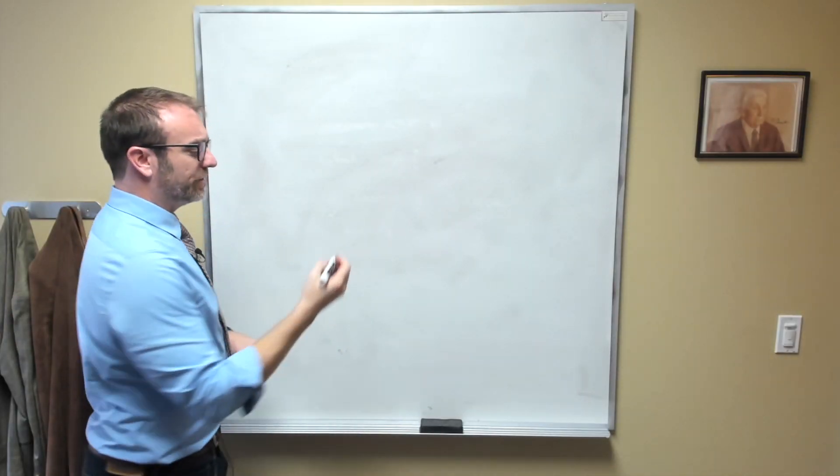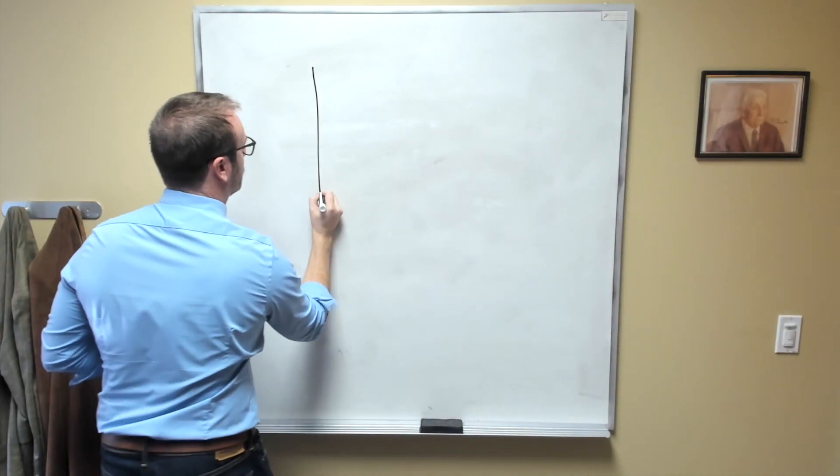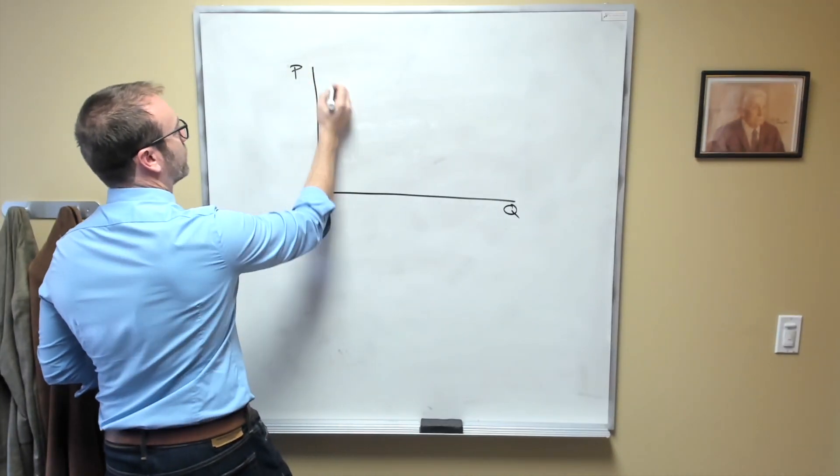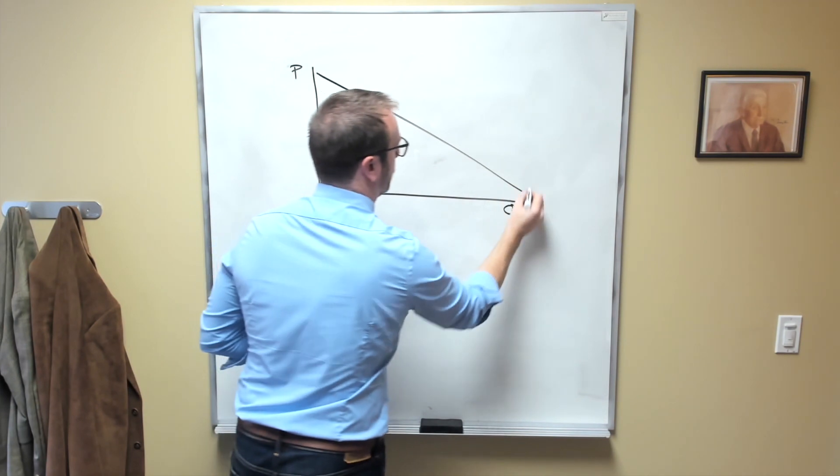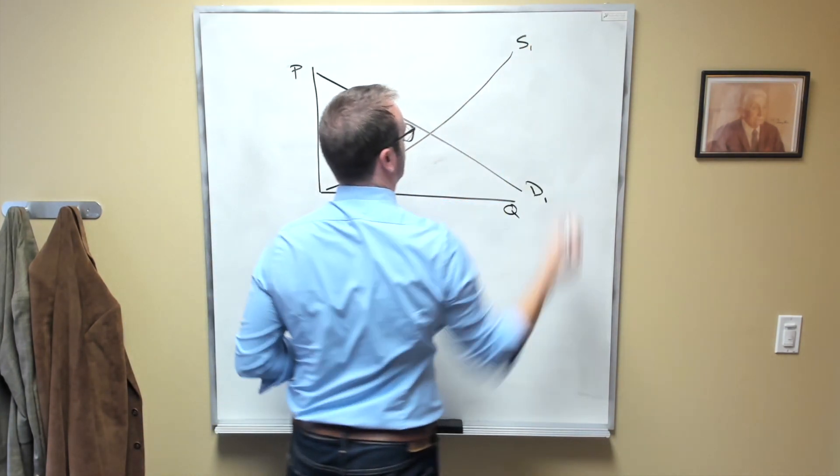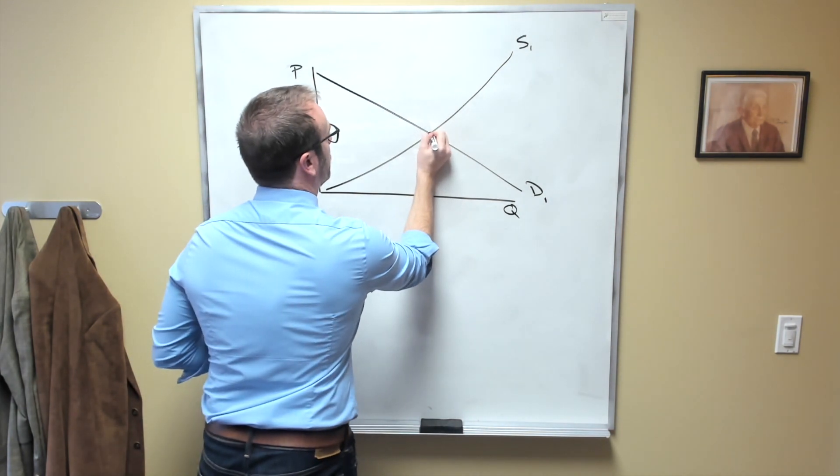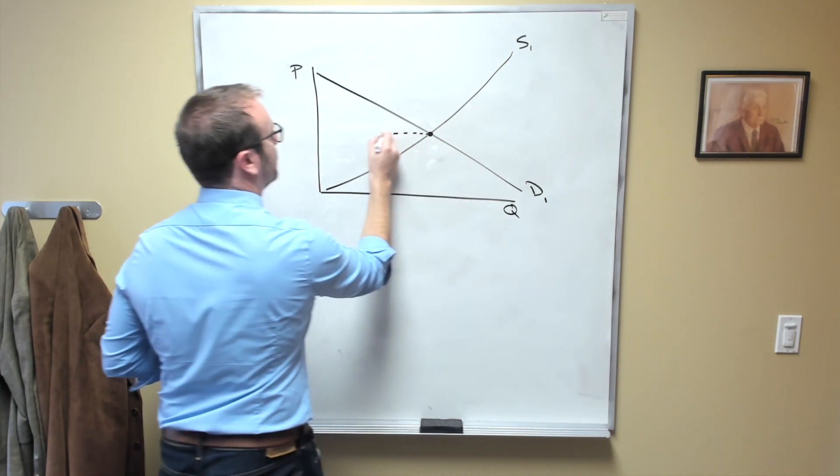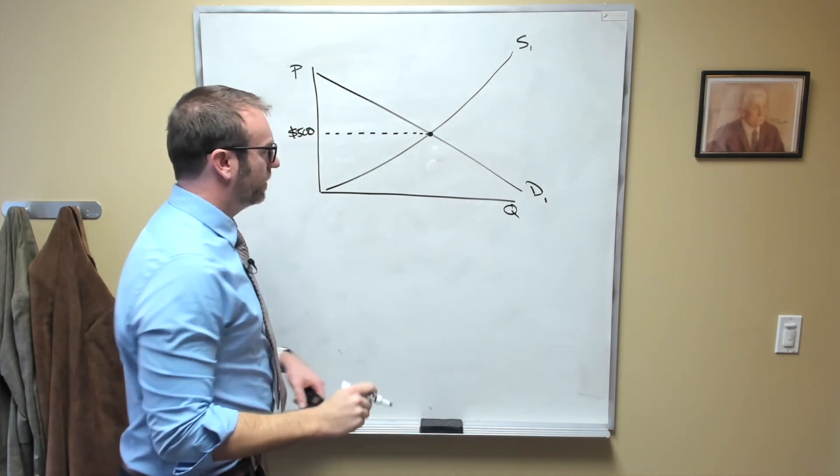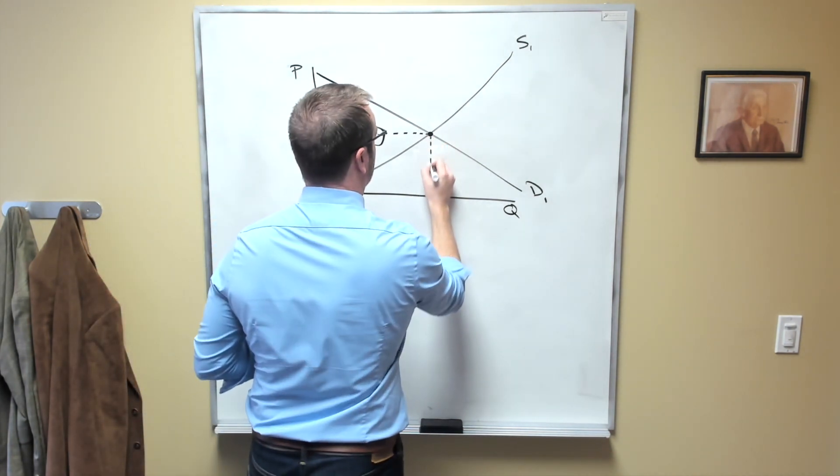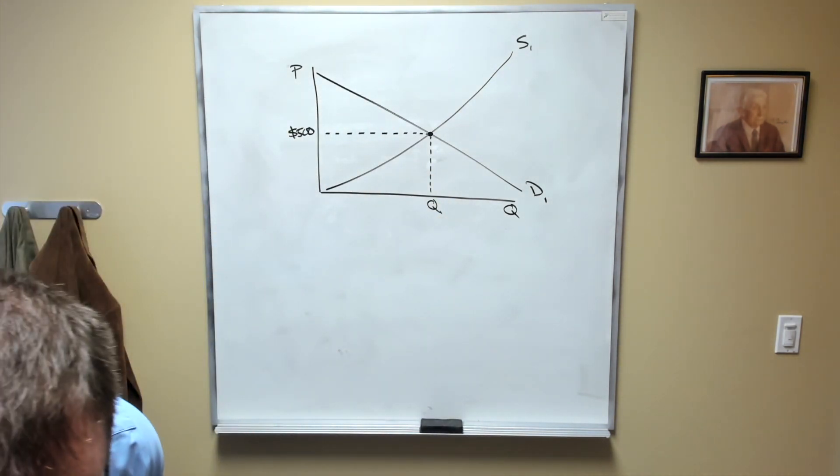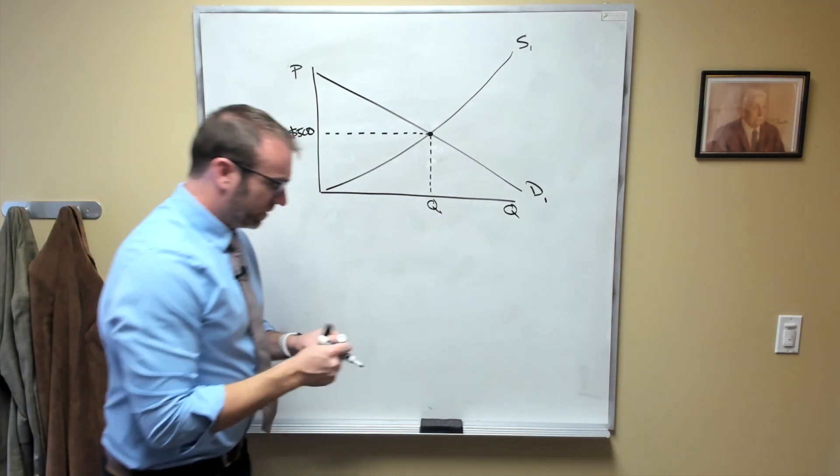Okay, so let's start off with a real simple example. We'll just start off with an ordinary market, price and quantity on the correct axes, downward sloping demand curve, and an upward sloping supply curve. And let's say we have an equilibrium price of, how about $500. And then there's an equilibrium quantity that doesn't really matter, so we'll just call it Q1.